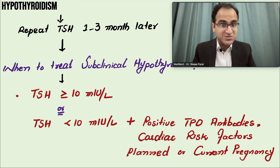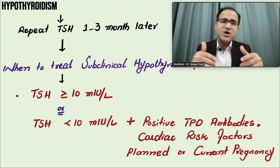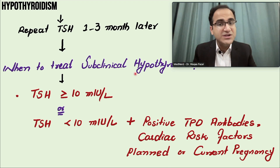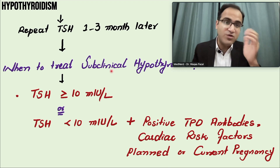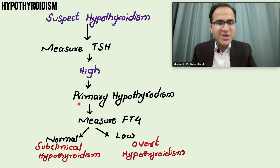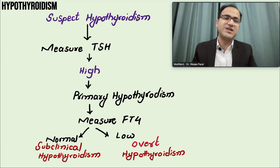You also have to treat patients with subclinical hypothyroidism who have a planned or current pregnancy, because pregnancy increases the demand for thyroid hormones due to fetal development. To summarize: whenever you suspect hypothyroidism, check the TSH level. If TSH is high, it is primary hypothyroidism. Then measure free T4 levels — if low, this is overt hypothyroidism; if free T4 is normal, this is subclinical hypothyroidism.